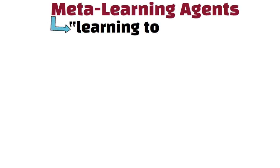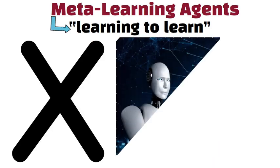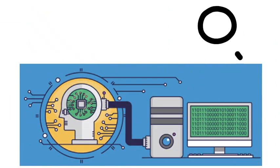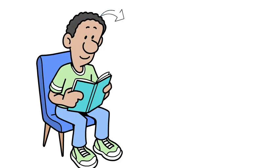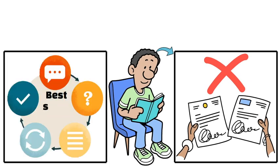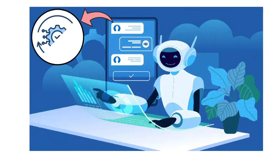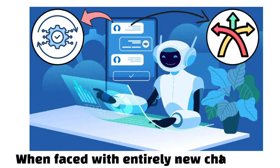Meta learning agents, sometimes known as learning-to-learn agents, focus on improving the way they learn rather than just learning a specific task. They analyze their own learning processes to find patterns and shortcuts that help them adapt more quickly in the future. Imagine a student who not only studies for an exam, but also learns the best study methods that work for them so they can perform well in any subject. These agents are designed to adjust their learning strategies dynamically, making them more flexible when faced with entirely new challenges.